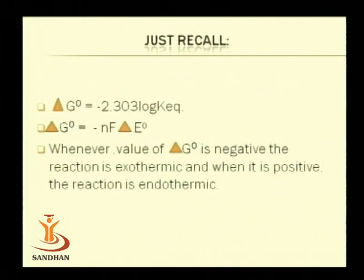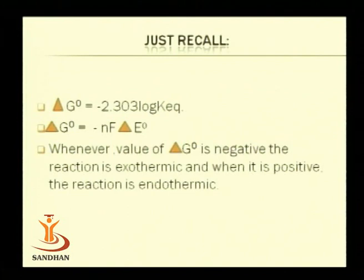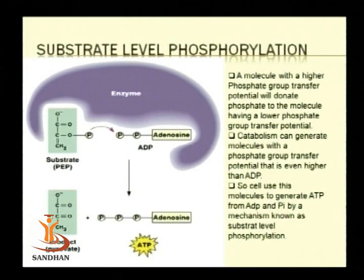Just as in chemistry we classify reactions as endothermic and exothermic, in microbiology we classify them as exergonic and endergonic reactions. A very simple mechanism used by many chemotrophs is substrate-level phosphorylation.